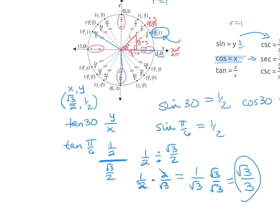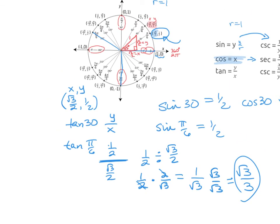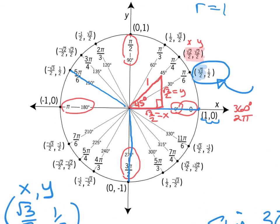Once we cover finding theta tomorrow, looking at the denominators of our radian measures is going to help us find the correct angle in the correct quadrant. We're still going to use our 'all students take calculus' to figure those out. But today, I'm going to give you a degree measure or a radian measure, and ask you to find the value of the trig function.